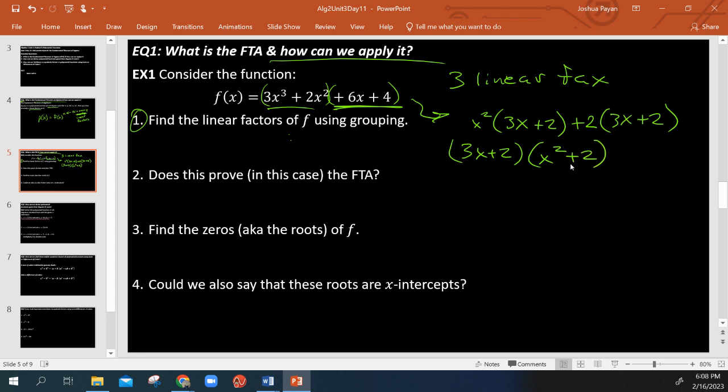Does this prove the fundamental theorem of algebra? It does tell us we're going to have two roots. But if we want to be really particular, I can treat this as a sum of squares: x plus the square root of 2i times x minus the square root of 2i. And we still have 3x plus 2. So there we have three linear factors—it actually does prove it, just with a complex pair of conjugates.